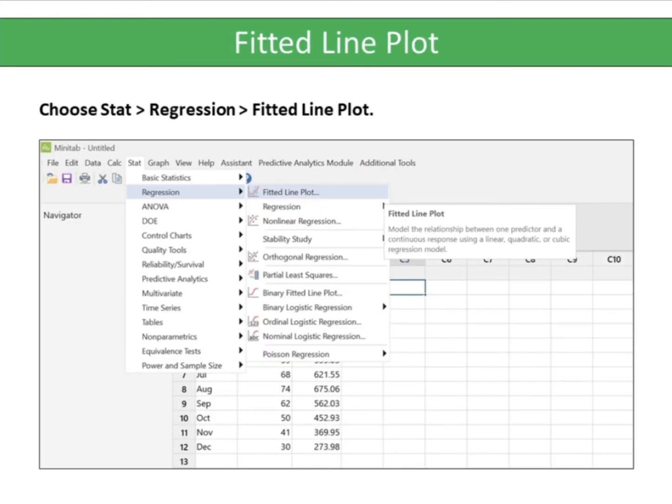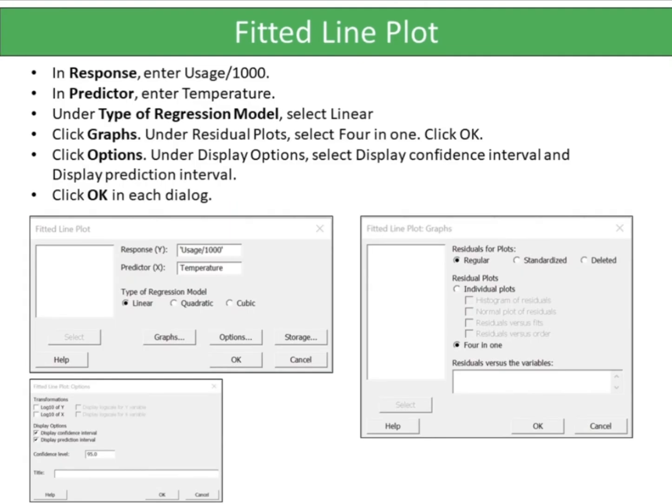Choose Stat, Regression, Fitted Line Plot. In Response, enter Usage Per 1000. In Predictor, enter Temperature. Under Type of Regression Model, select Linear.